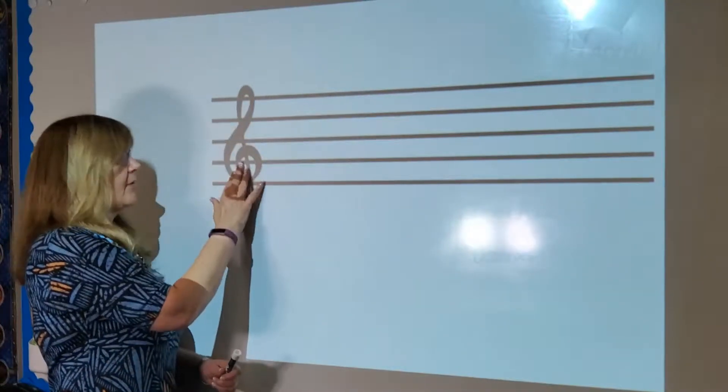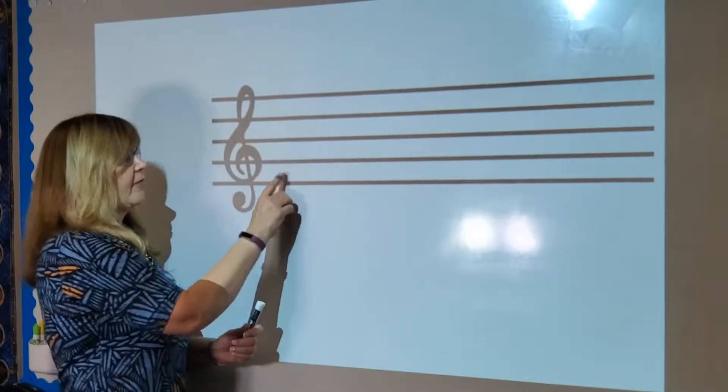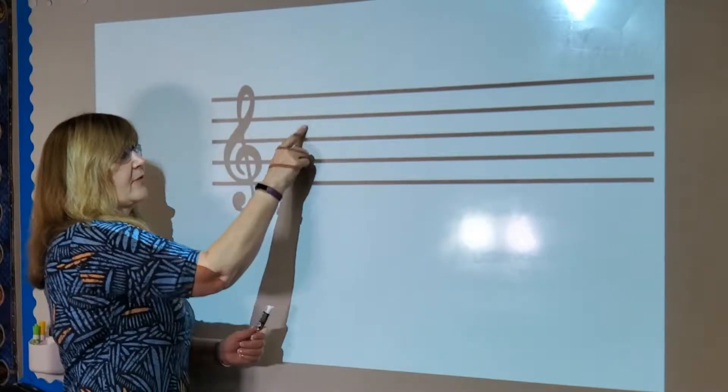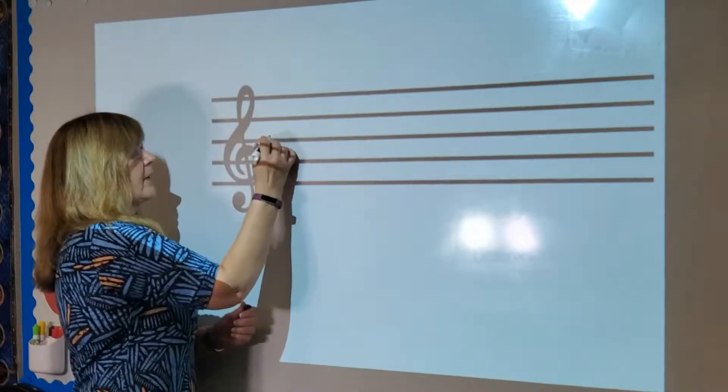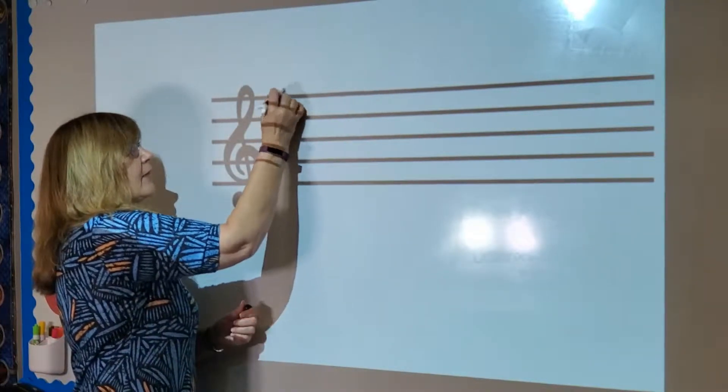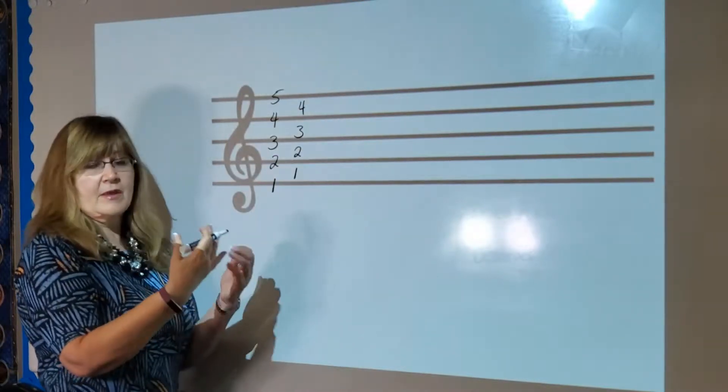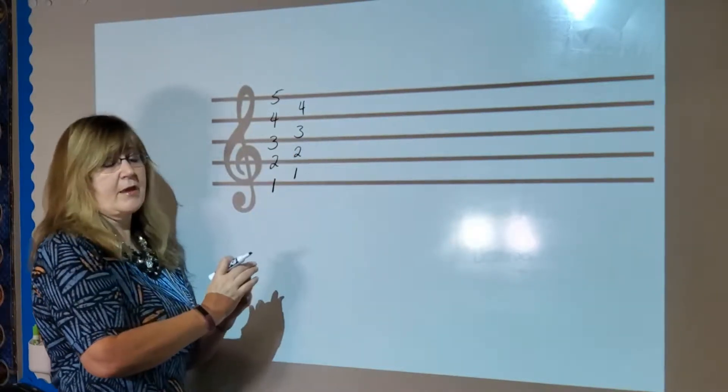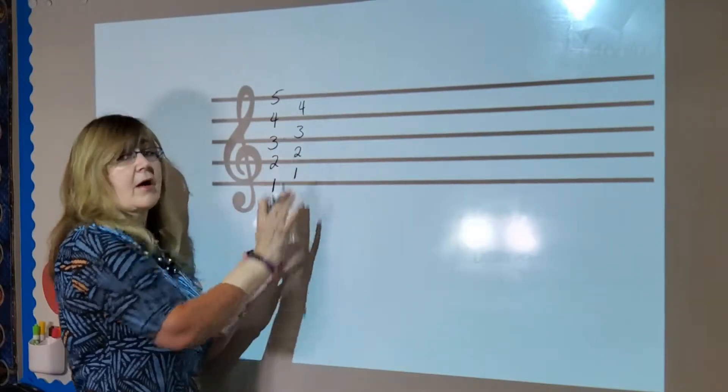We have the treble clef right here and it's on a staff. A staff has five lines and four spaces. We count them from the bottom up and same for the spaces and that's important because if I ever said what's on the second space or the first line makes a big difference.